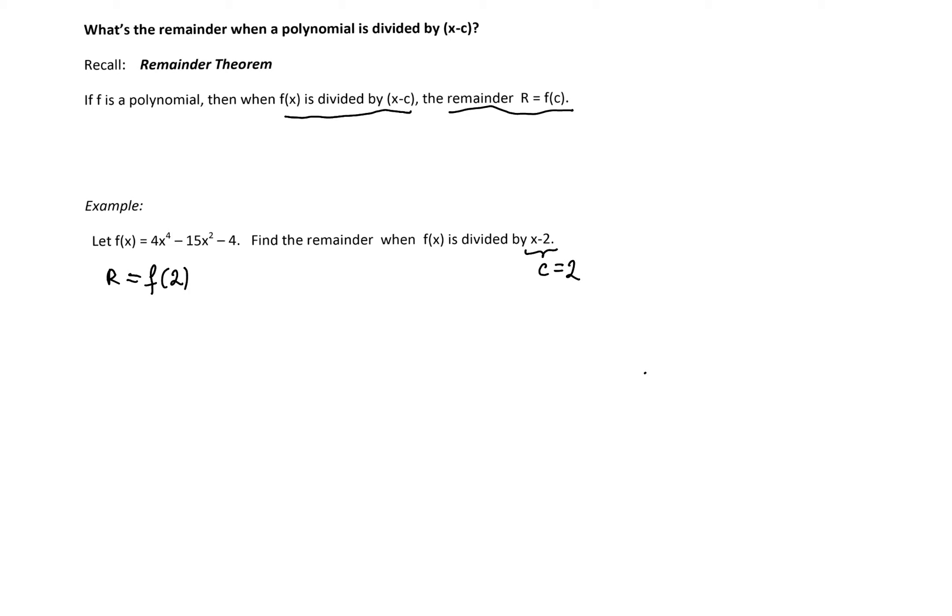So what is f of 2? We can compute quickly. Substituting x with the 2 will have 4 times 2 to the fourth minus 15, 2 squared minus 4 which is 4 times 16 minus 15 times 4 minus 4 and that's going to be 64 minus 60 minus 4 which is 0. So the remainder is equal 0.